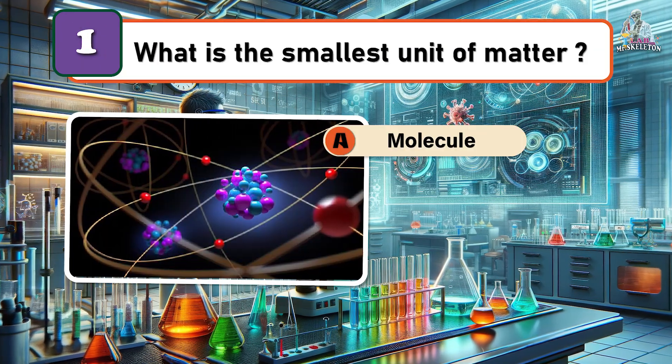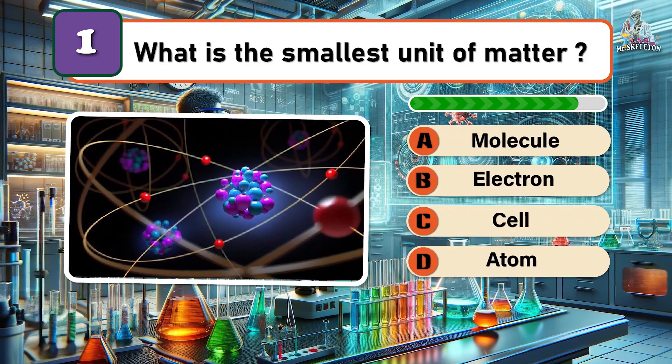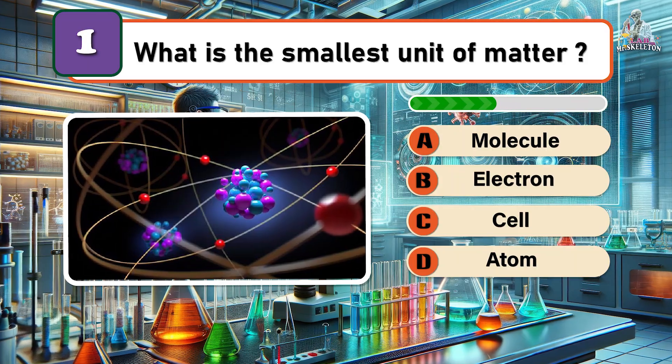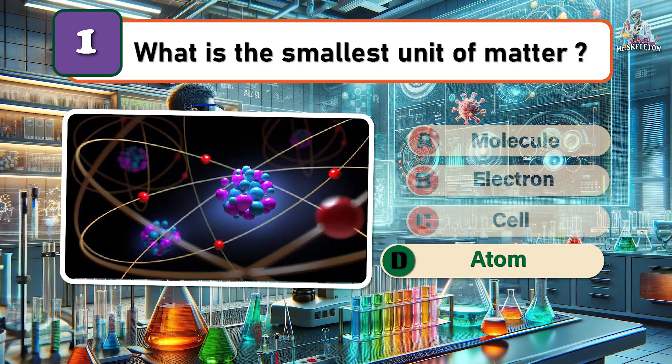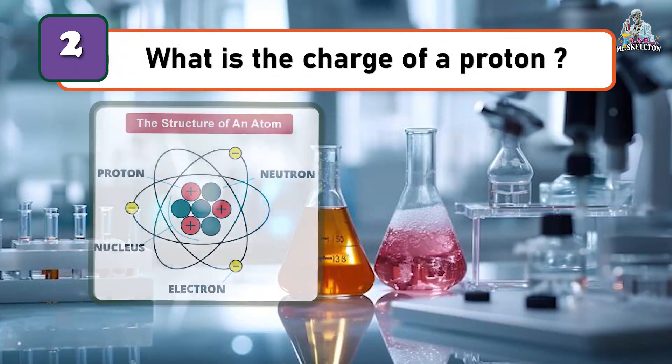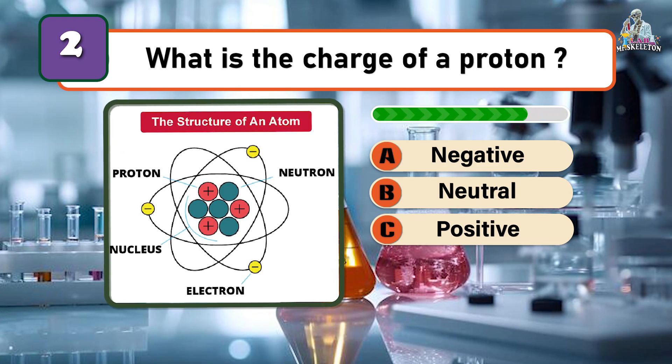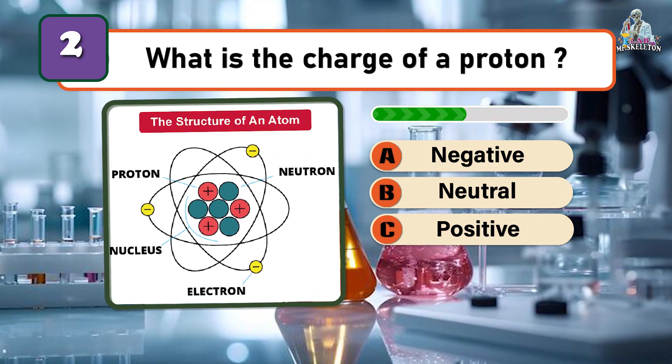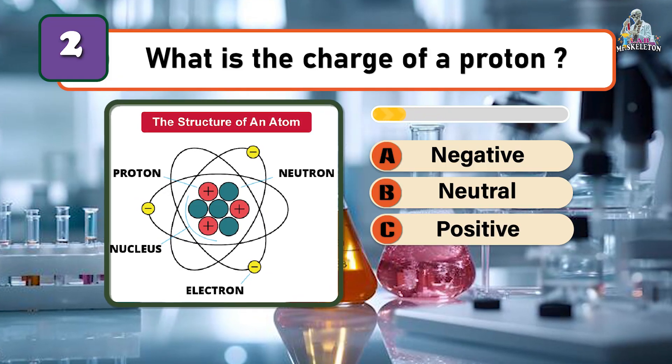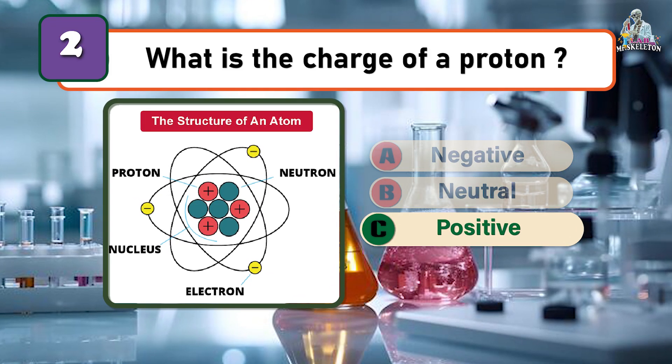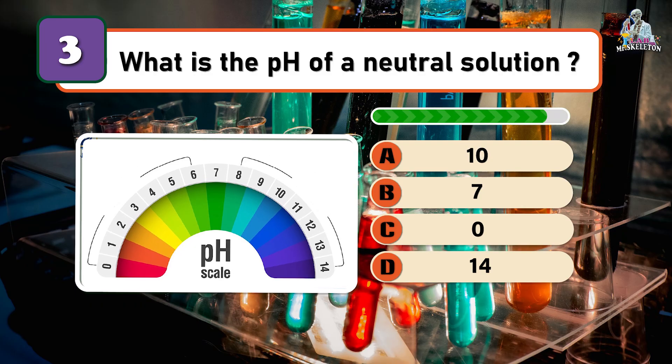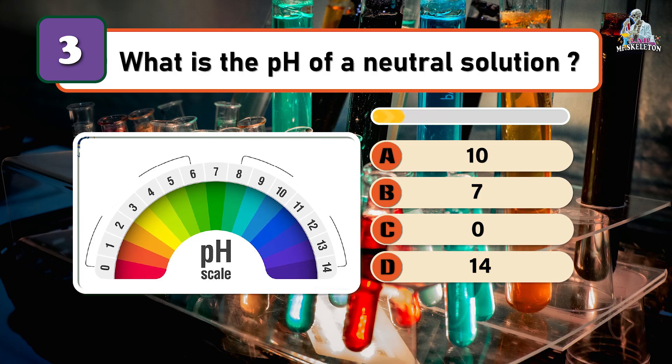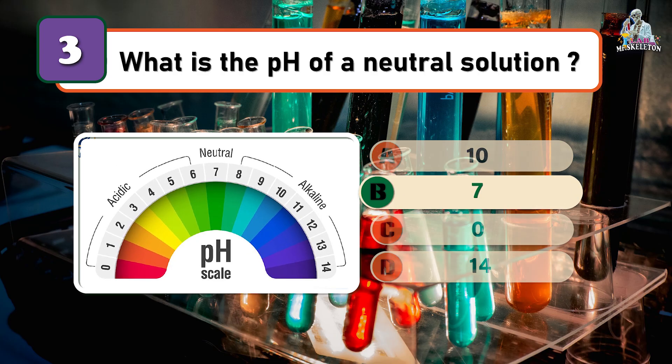Which is the smallest unit of matter? It's an atom. What is the charge of a proton? Positive. What is the pH of a neutral solution? The correct answer is 7.